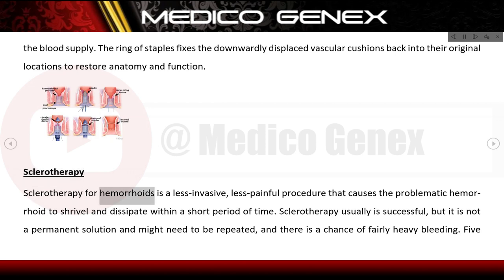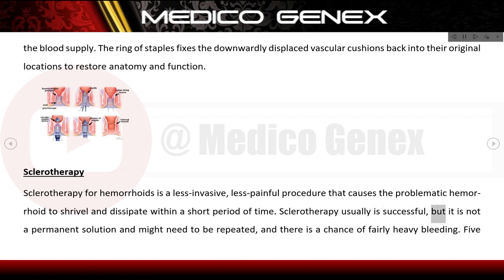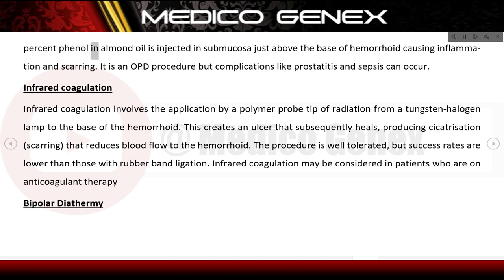Sclerotherapy is a less invasive, less painful procedure that causes the problematic haemorrhoid to shrivel and dissipate within a short period of time. It is usually successful but not a permanent solution and might need to be repeated. 5% phenol in almond oil is injected in the submucosa just above the base of the haemorrhoid, causing inflammation and scarring. It is an outpatient procedure, but complications like prostatitis and sepsis can occur.